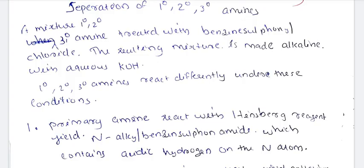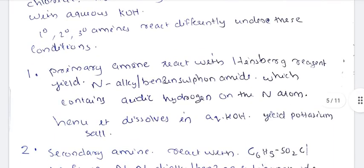Let's look at the reaction. Primary, secondary, and tertiary amines react differently under these conditions. First, primary amines react with the Hinsberg reagent. The product formed is N-alkyl benzene sulfonamide. You can see it as a structure, which will actually be important for organic chemistry.